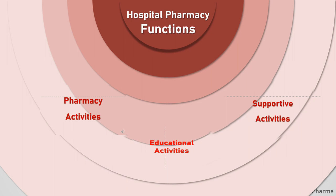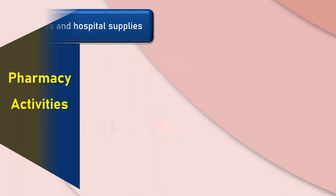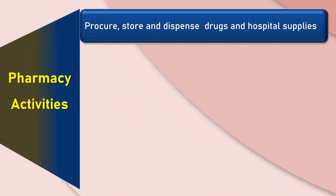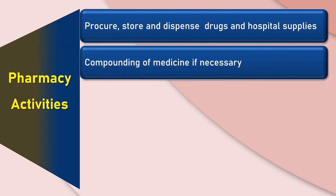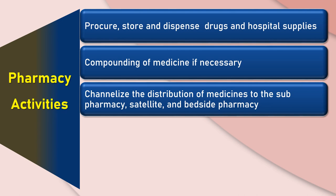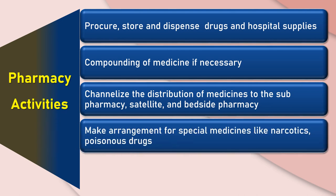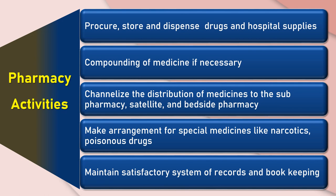On the basis of these objectives, the functions of hospital pharmacy are categorized under three headings: pharmacy activities, educational activities, and supportive activities. Let us focus on the pharmacy-related functions. Hospital pharmacy should procure, store, and dispense drugs and hospital supplies. If required, compounding should be carried out, for which all required equipment must be made available inside the pharmacy. Channelize the drug distribution system to ward pharmacy, sub-pharmacy, satellite, and bedside pharmacy. Make necessary arrangements for storage and accounting of special medicines like narcotics, psychotropic substances, and poisonous drugs. Maintain a very good system of records and keep books of records.